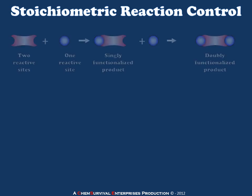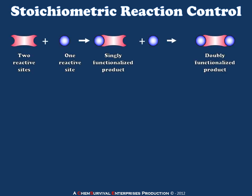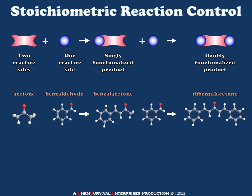One relevant example of this type of reaction is the formation of dibenzalacetone via an aldol condensation. Acetone has two reactive sites because it has two alpha-carbons with potentially acidic protons. We can attach a single benzaldehyde to form benzalacetone, or go on and attach a second to form dibenzalacetone.